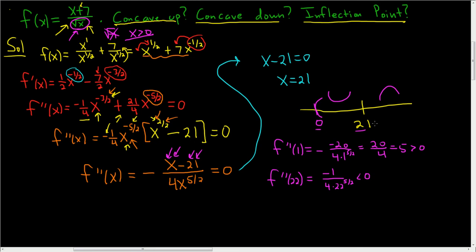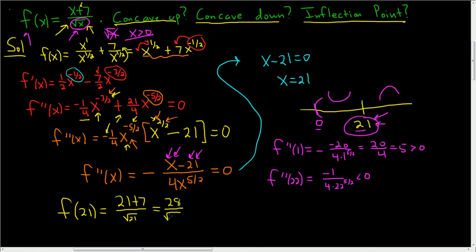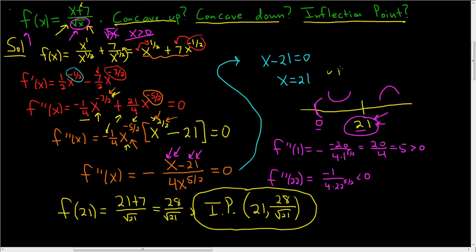We will have an inflection point. To find it, we plug x equals twenty-one back into the original function. f of twenty-one equals twenty-one plus seven over the square root of twenty-one, which equals twenty-eight over the square root of twenty-one. So the inflection point is (21, 28 over the square root of 21). We have an inflection point because the concavity changes from up to down.